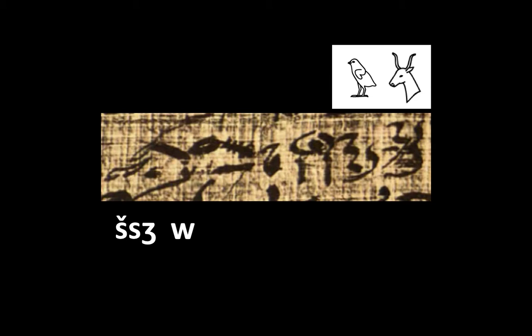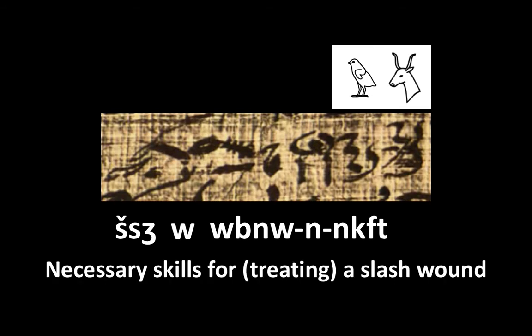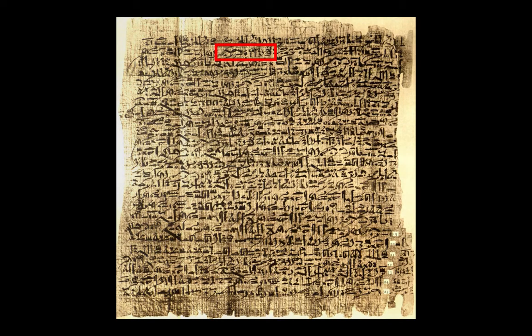You can go on transliterating the rest of the sentence, and you obtain a sentence which translated into English reads: 'Necessary skills for treating a slash wound.' The Edwin Smith Papyrus is in fact a tractate of orthopedic and traumatic surgery — it is the oldest known book of trauma surgery. Today it can be admired in the library of the New York Medical Association.